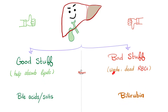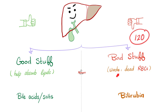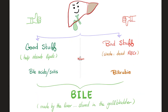Why is bilirubin bad? Because it's the waste product of senescent dead red blood cells that the splenic macrophages have destroyed. The average lifespan of a red blood cell is 120 days. After this, the spleen destroys the red blood cells and the end result is bilirubin, which is wasteful and needs to be excreted. You can thank the liver for this.